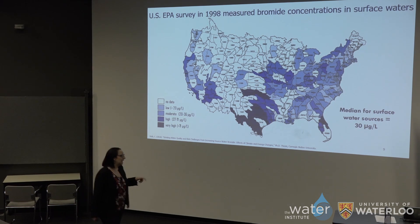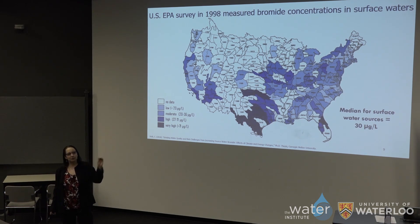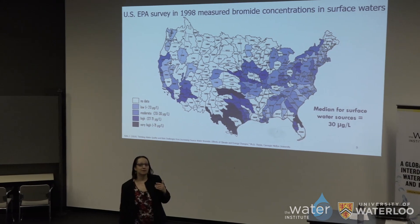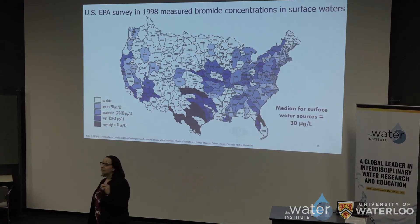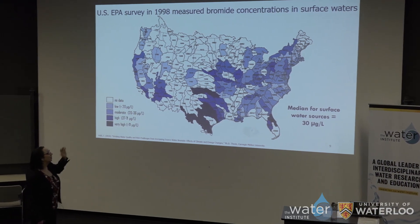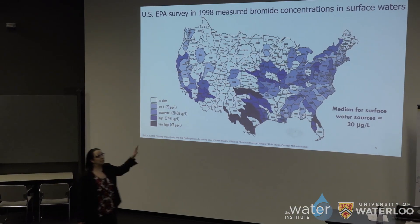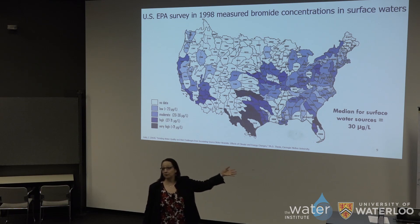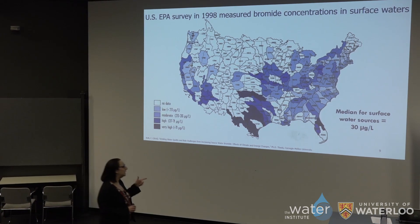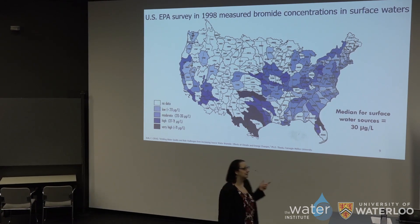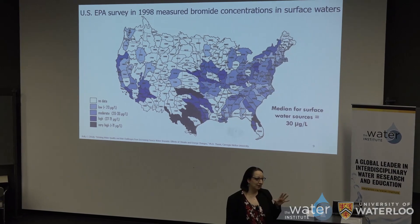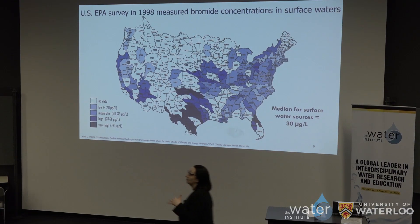In the late 1990s, the EPA put out an information collection rule which collected information about disinfection byproduct formation in drinking water plants serving large populations. One of the things they asked was how much bromide is in your source water. We have a historical dataset from 1997 to 1998 on bromide concentrations in the US, rolled up to the watershed level. The median for all surface water sources in the US in 1998 was 30 micrograms per liter. I need you to keep that number in mind: 30 micrograms per liter.